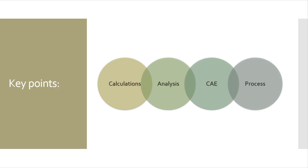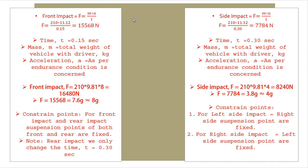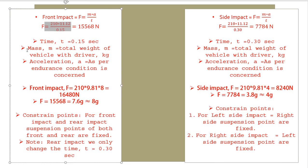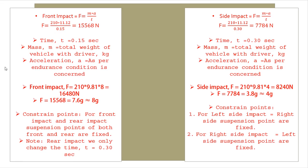Now we will look after each and every calculation. First, front impact. For front impact we have considered formula of impulse momentum equation F equals m times a upon time. We have considered 210 as total mass of vehicle with driver in kg, and 11.12 as acceleration as per endurance condition.